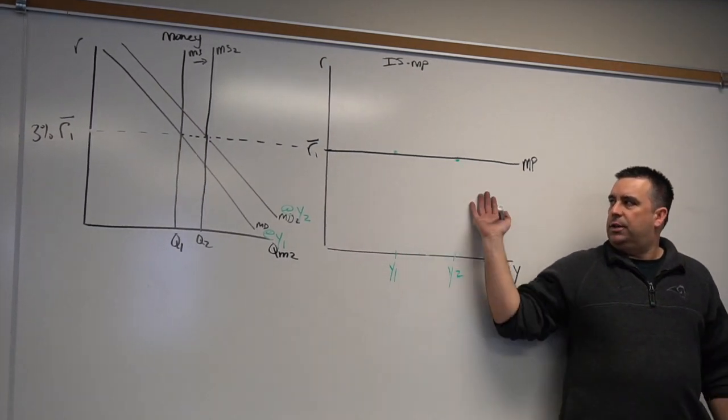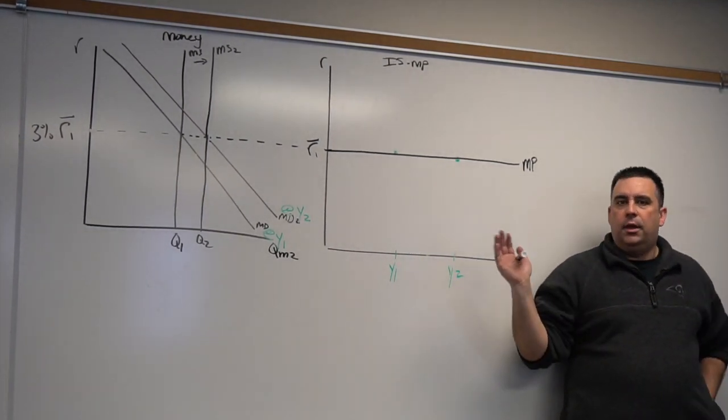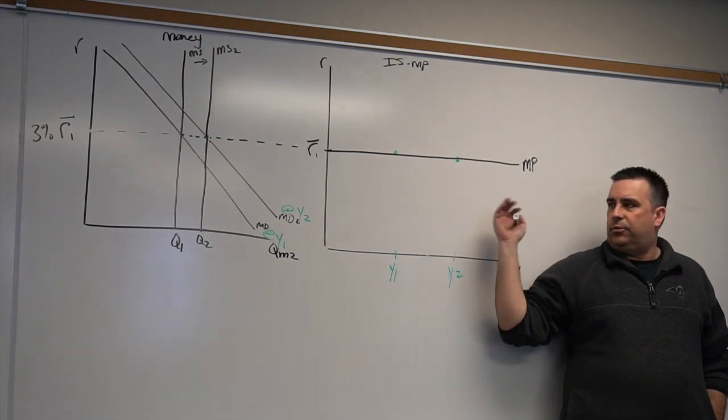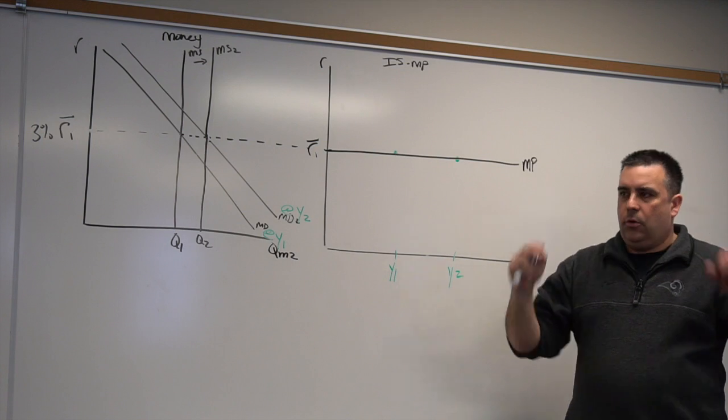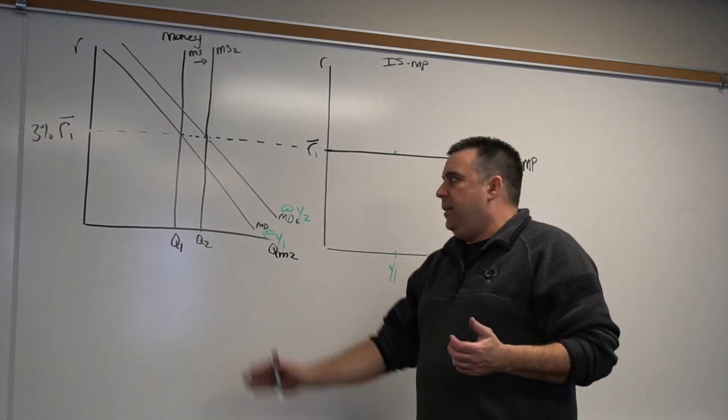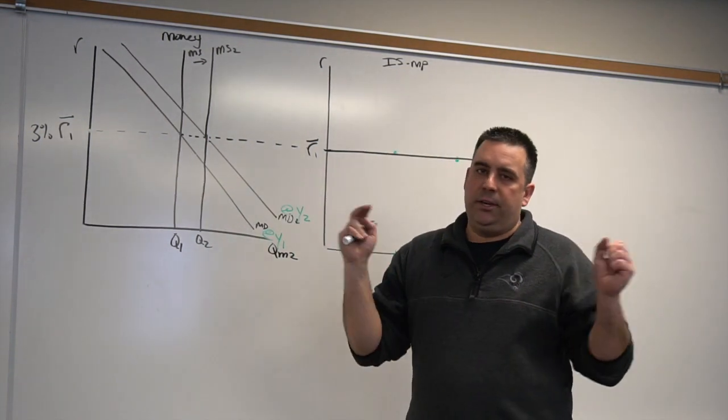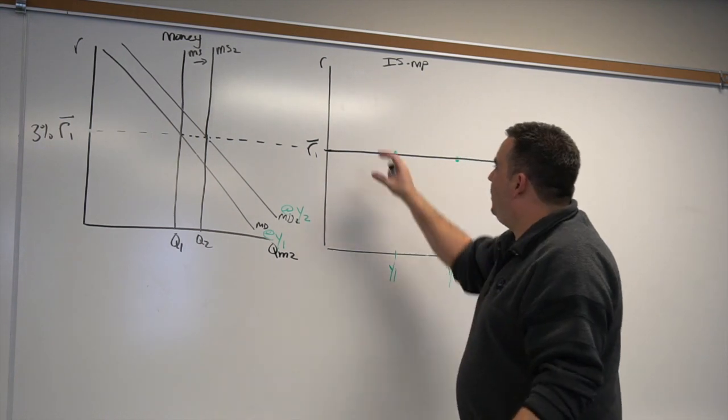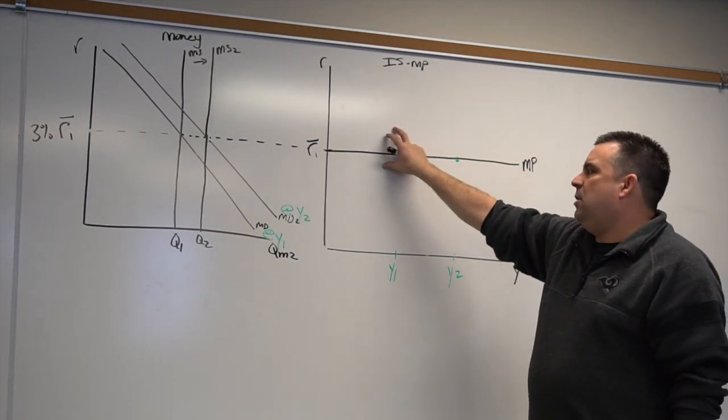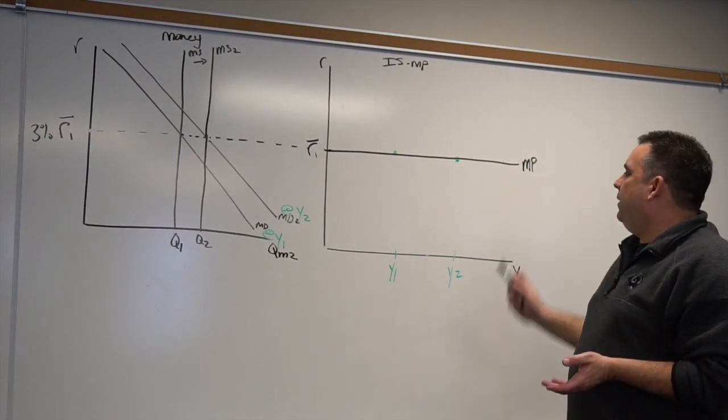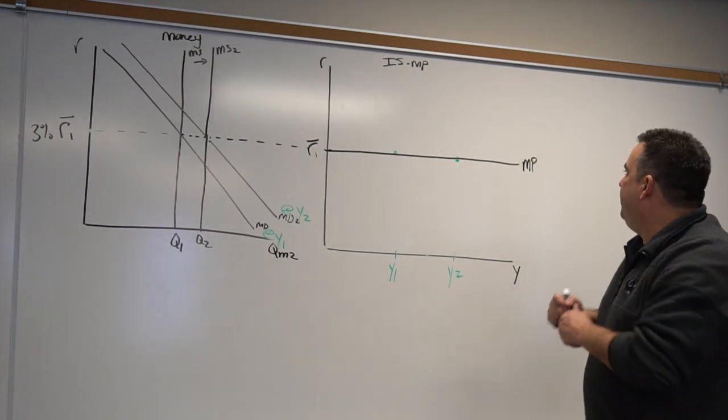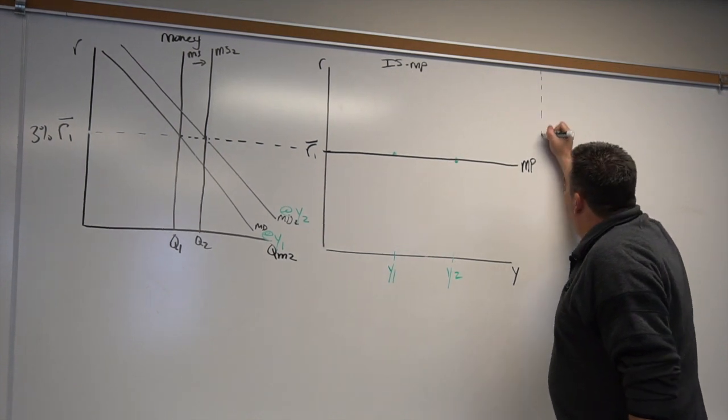The Federal Reserve, quote unquote, sets the interest rate. They can adjust to keep the interest rate at a constant value. Thus, at any Y amount, R is just whatever the Federal Reserve picks, and our MP function is found at that value.